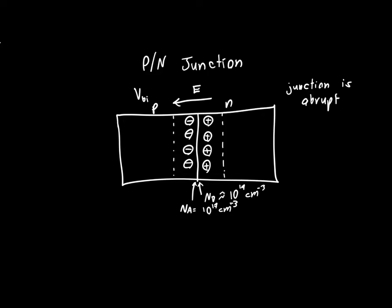And we also assume that the depletion width itself is abrupt, so that there's this certain region, there's a certain distance, we'll say XN, that contains positive ions. And outside that region, there's no net charge. Similarly, there's a region on the P side with length XP, outside which there are no negative ions, or there are negative ions, but no net negative ions. So we're assuming the depletion region is abrupt as well.